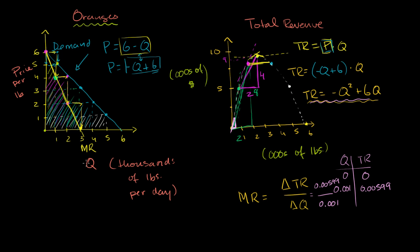Let's think about what the optimal quantity is for us to produce if we want to maximize profit. In pure economic terms, that's what firms try to do — they exist to maximize profit. And to do that, remember, it's not about maximizing revenue. To maximize revenue we would just produce 3,000 pounds. It's about maximizing profit, so we have to take cost into consideration, and to do that we'll have to draw a marginal cost curve.